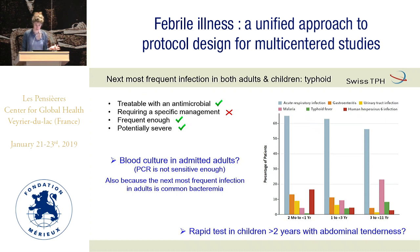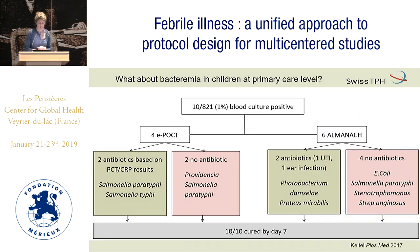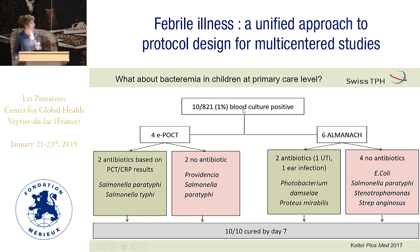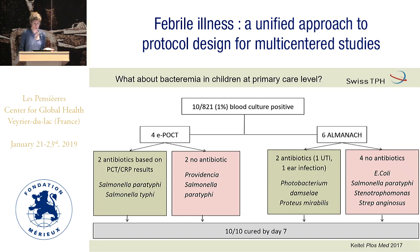For bacteremia, should all children have blood culture? We've seen very few are positive. When we retrospectively looked at blood culture data in the EPOCT study, some children were treated because CRP was high, but two had low CRP, were still bacteremic, we didn't treat them — and nothing happened to them. Similarly in ALMANAC. So children with a good immune system can clear bacterial infections themselves. It's only when they are malnourished or have other problems that they might die.